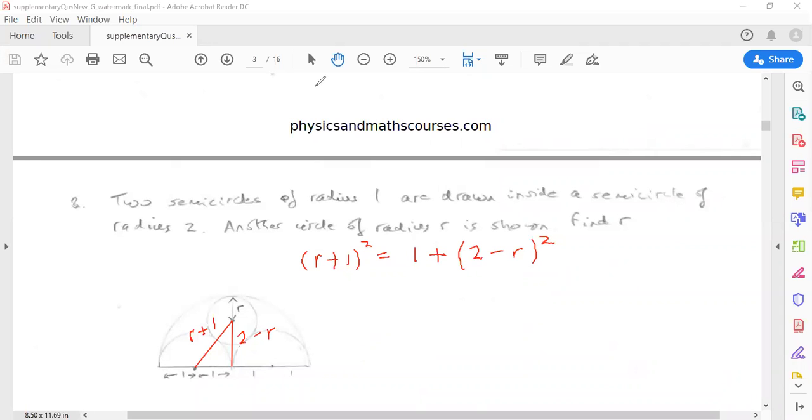And actually the r squareds, when you expand the brackets, are going to cancel out, and when you solve for r, you get r is 2 thirds. And that's the final solution.